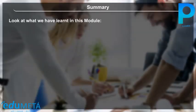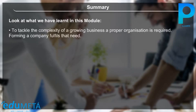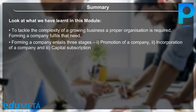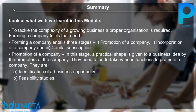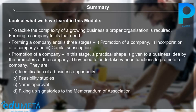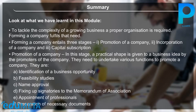Summary: To tackle the complexity of a growing business, a proper organization is required, and forming a company fulfils that need. Forming a company entails three stages: 1. Promotion of a company, 2. Incorporation of a company, 3. Capital subscription. In the promotion stage, a practical shape is given to a business idea by the promoters. Their functions are: A. Identification of a business opportunity, B. Feasibility studies, C. Name approval, D. Fixing up signatories to the Memorandum of Association, E. Appointment of professionals, F. Preparation of necessary documents.